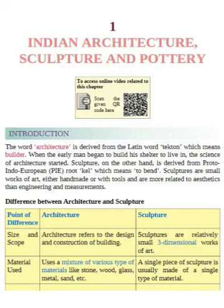Difference between architecture and sculpture. Point of difference: Architecture refers to the design and construction of buildings. Sculptures are relatively small, three-dimensional works of art.